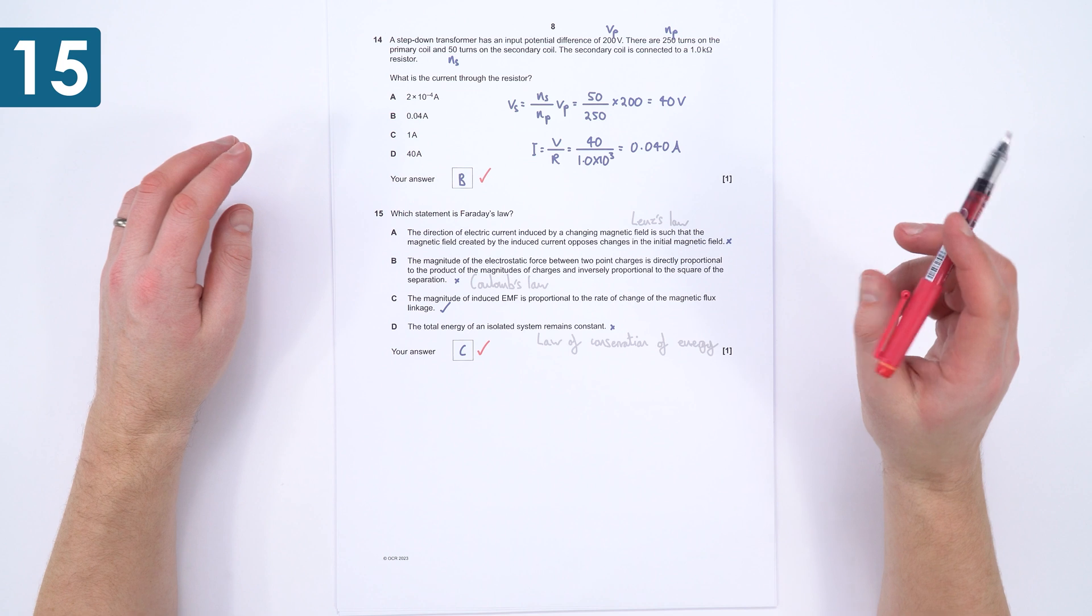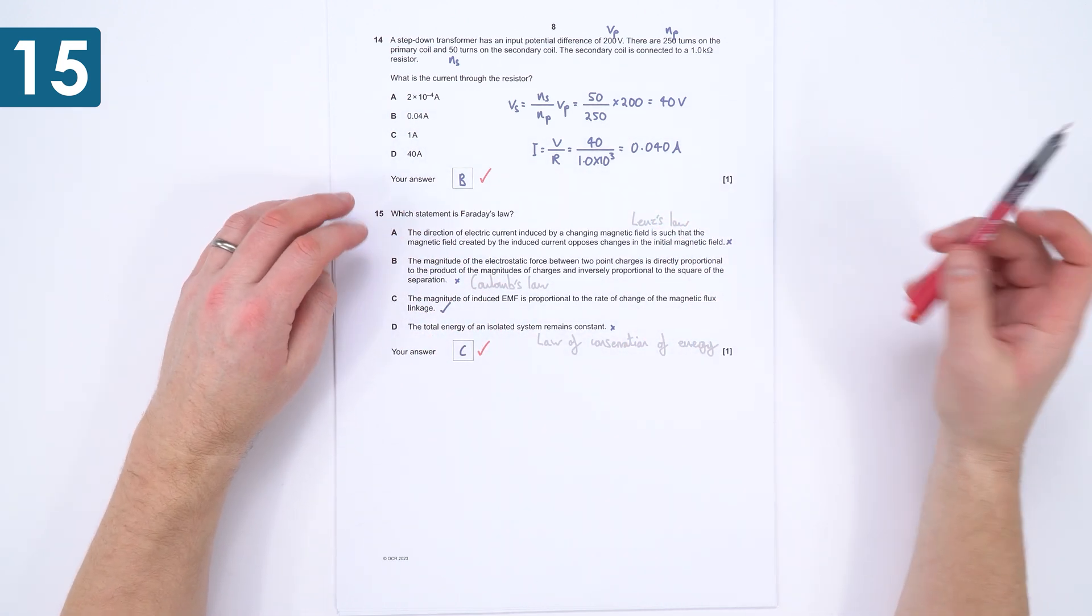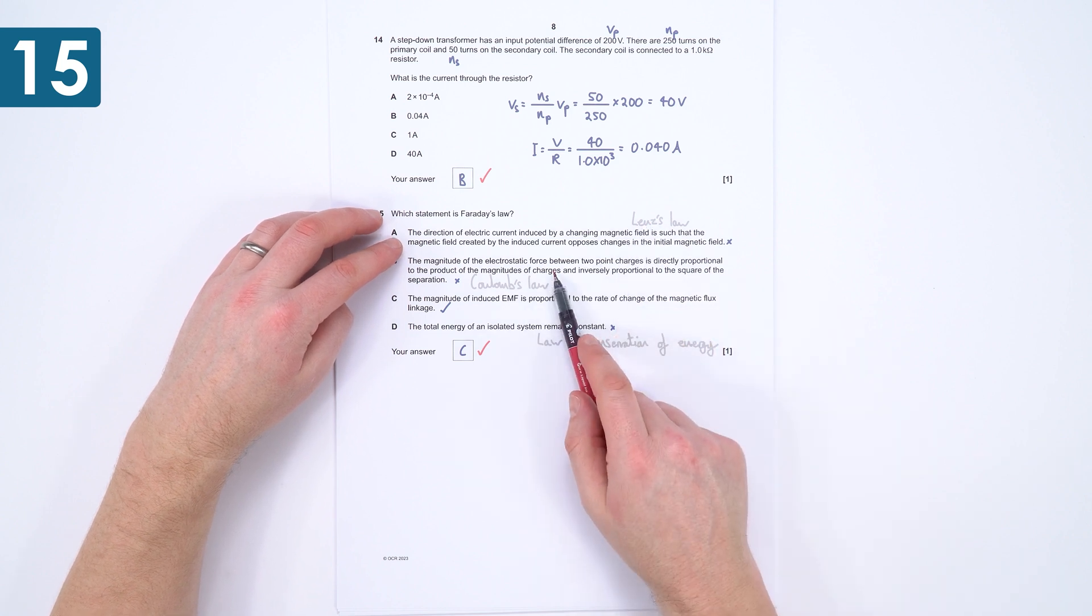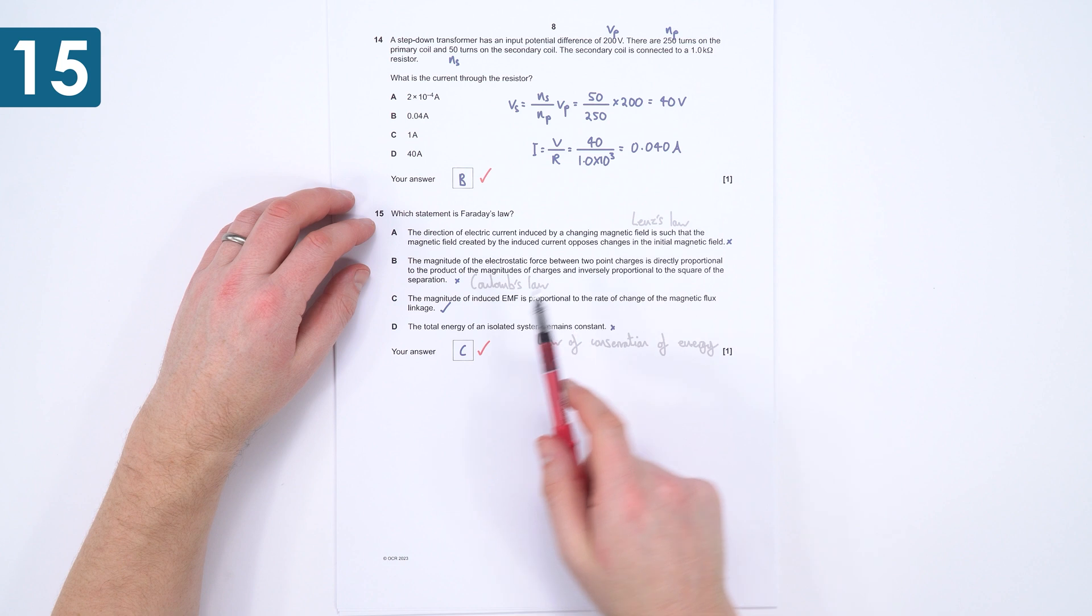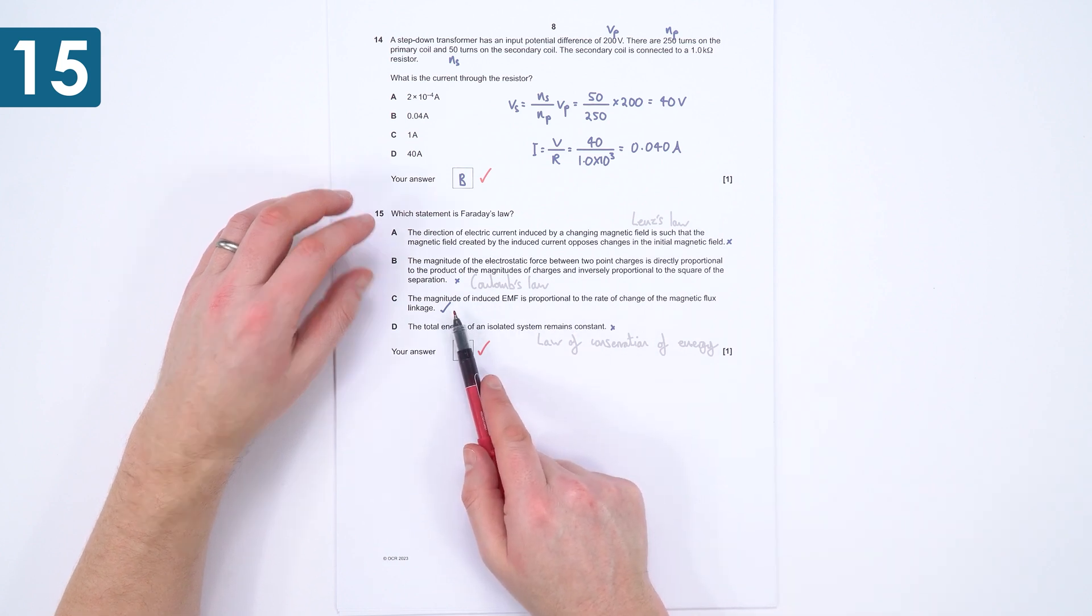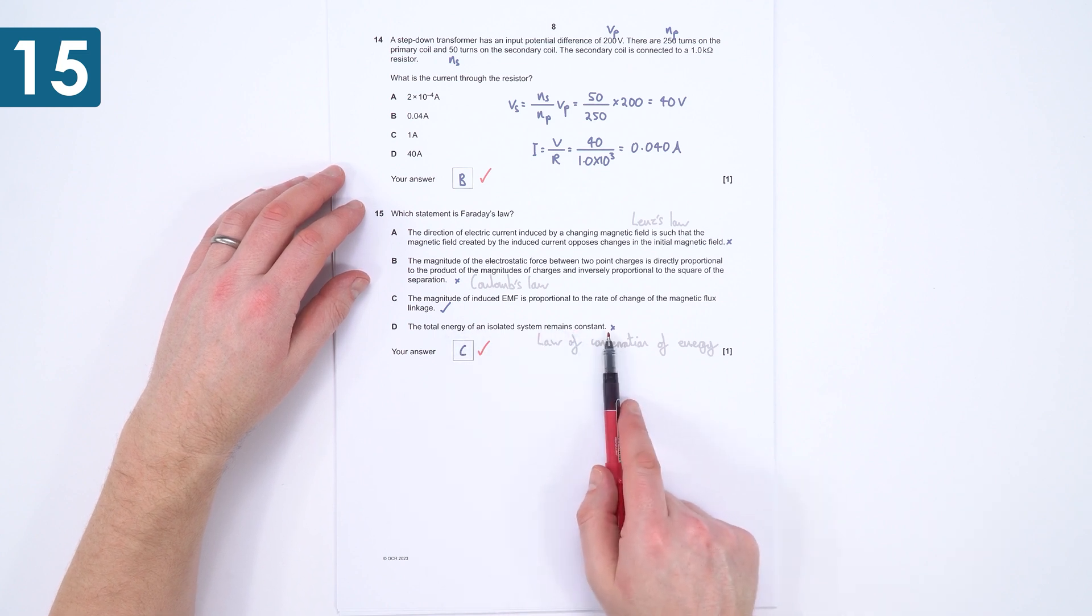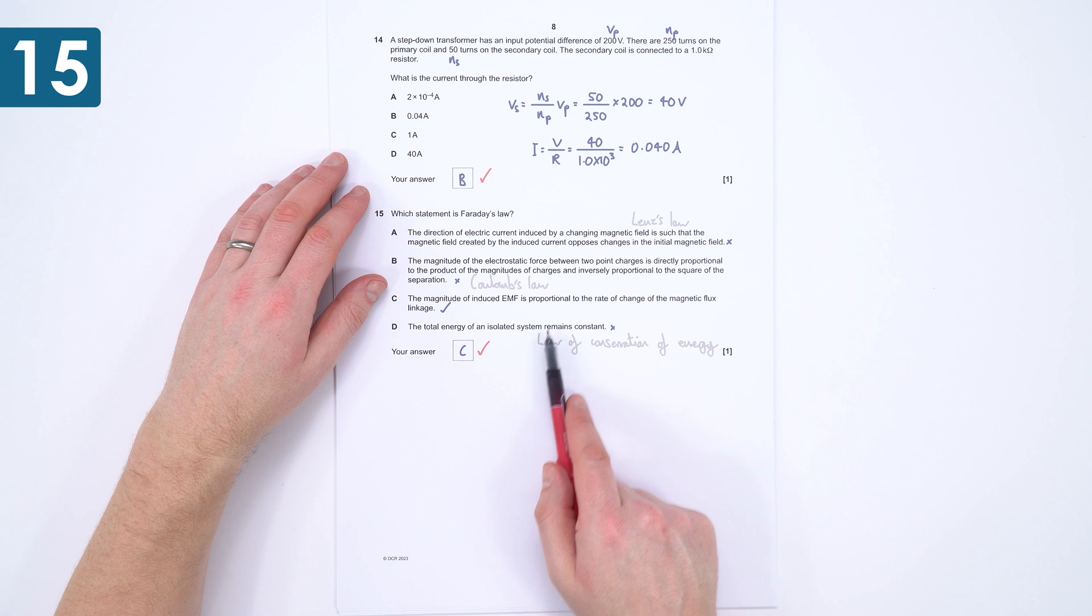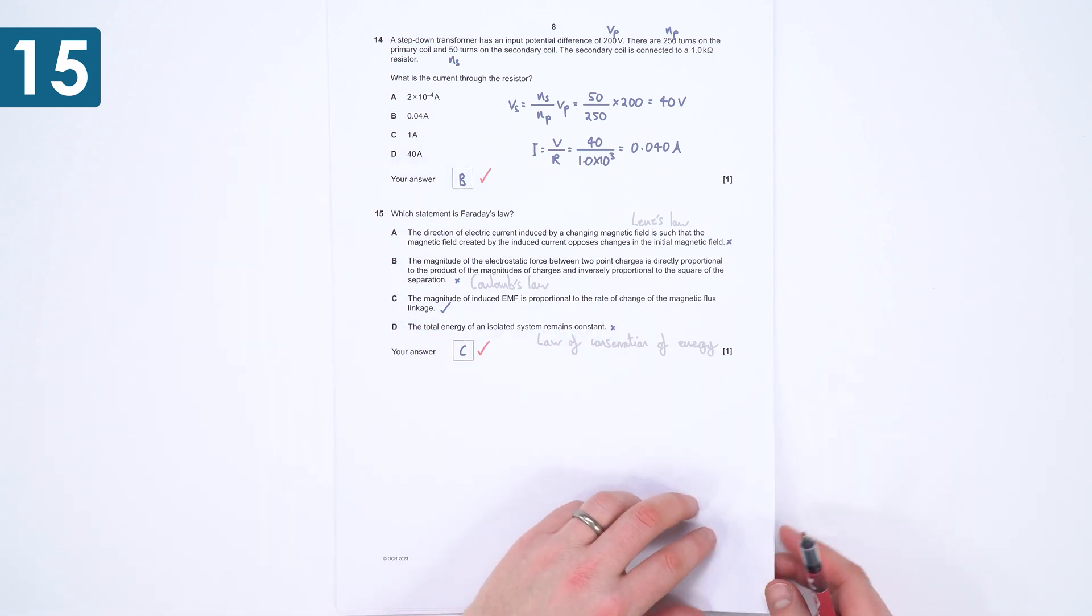And for number 15, this one here, if you know the physics, easy marks. So the first one is Lenz's law. The second one is Coulomb's law about the interaction of these two charged particles. This one over here is Faraday's law, which is what we used in question 13. And the last one is just called the law of conservation of energy. There's no scientist name attributed to that. So here, the only correct answer is C, and therefore the answer is C.